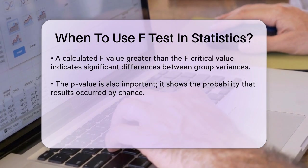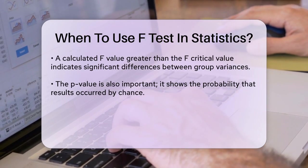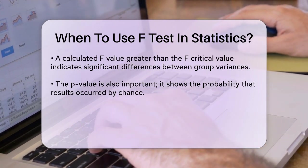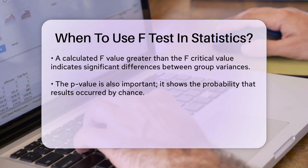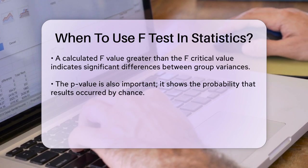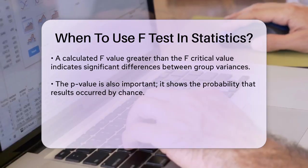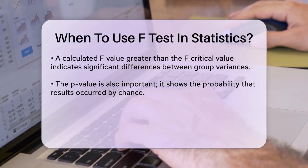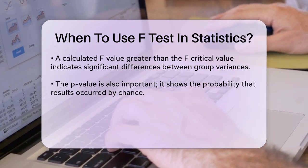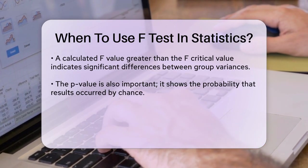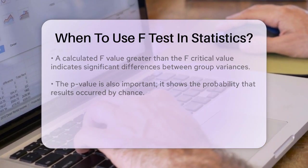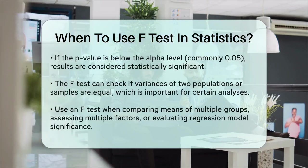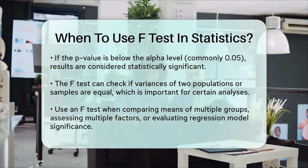It's also important to consider the P-value along with the F-statistic. The P-value tells you the probability that your results could have occurred by chance. If the P-value is less than your chosen alpha level, usually 0.05, you can conclude that the results are statistically significant.